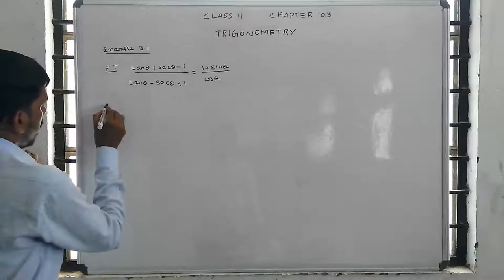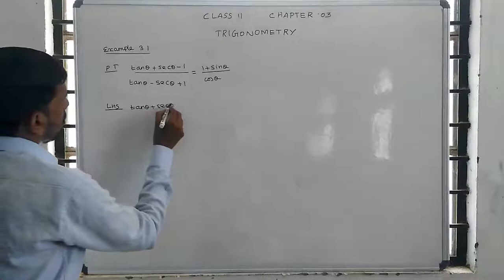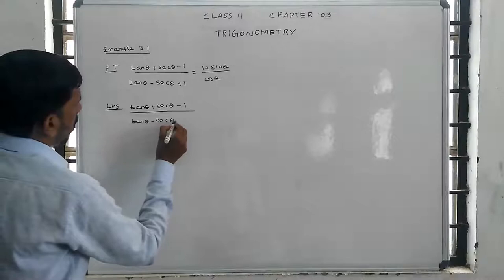So let's take the left hand side: tan theta plus secant theta minus 1, divided by tan theta minus secant theta plus 1.